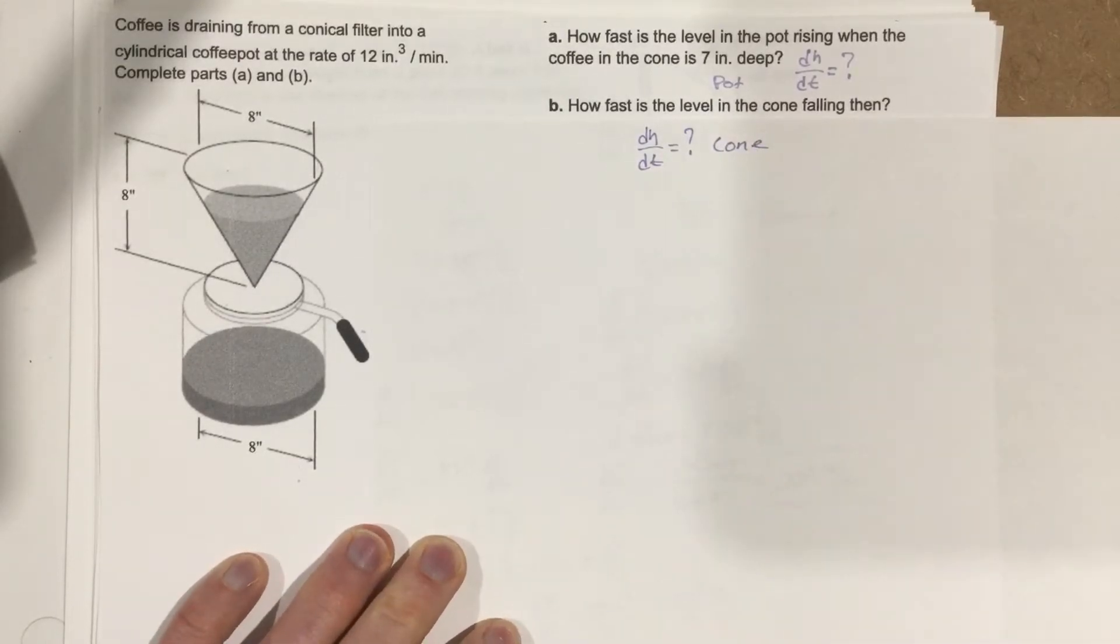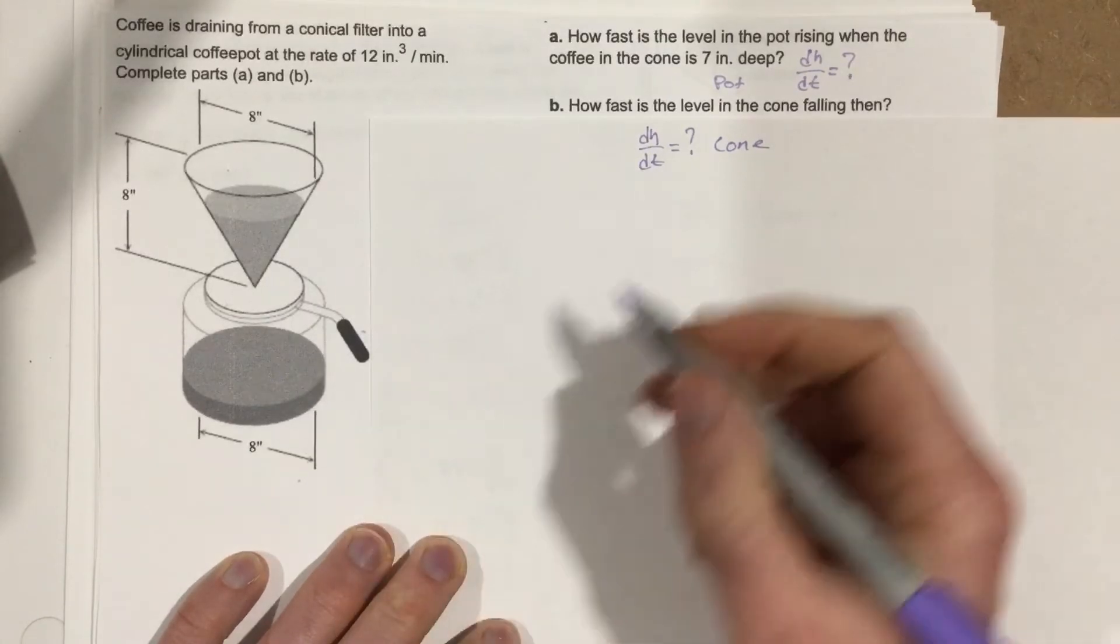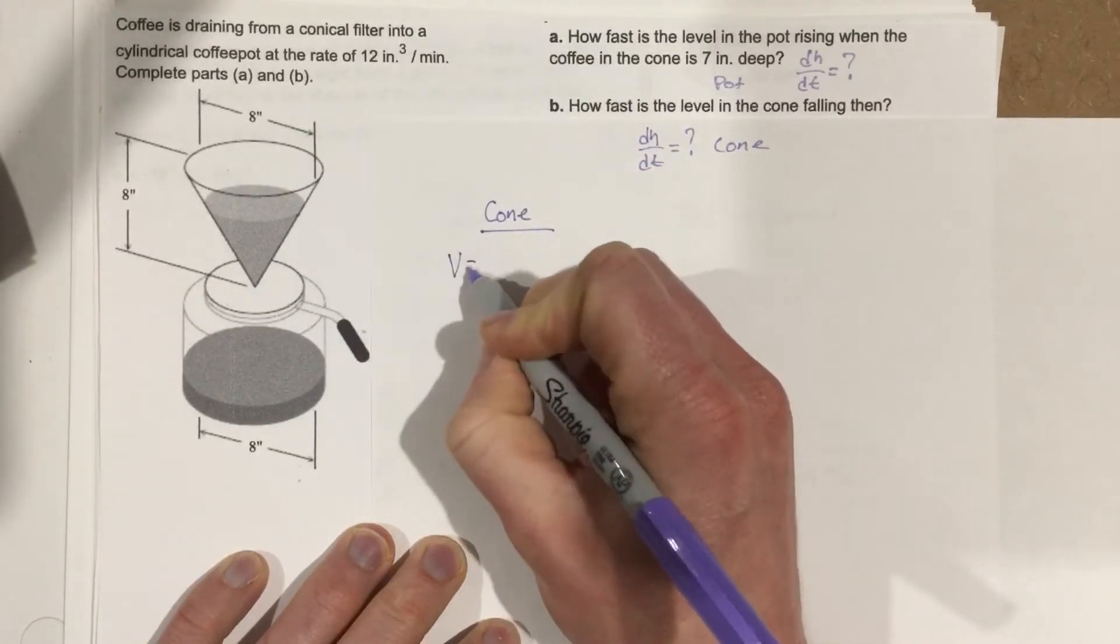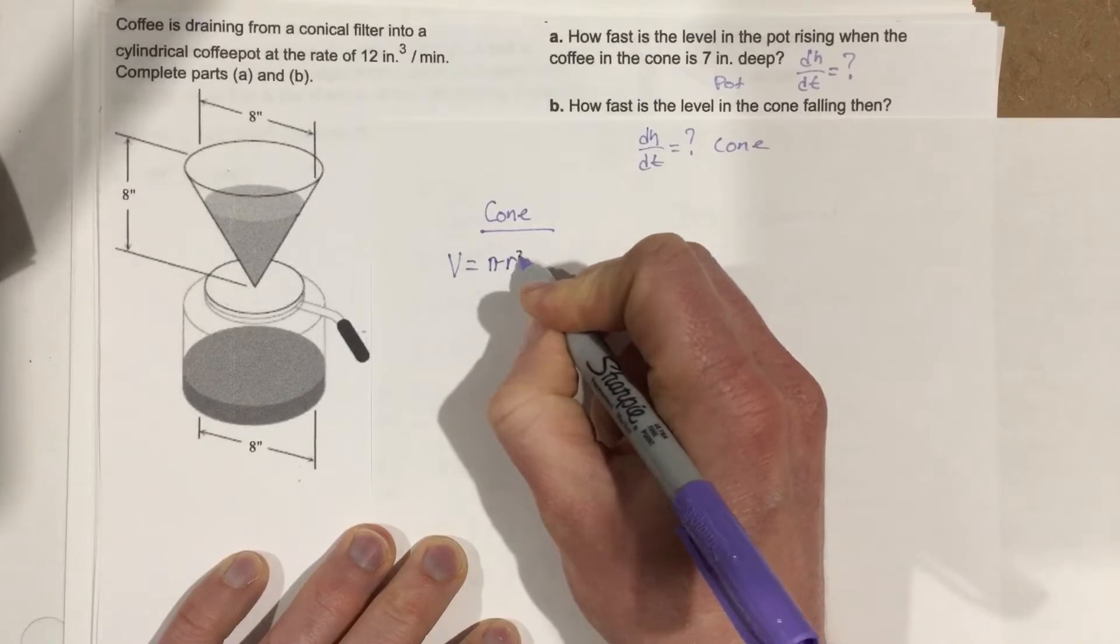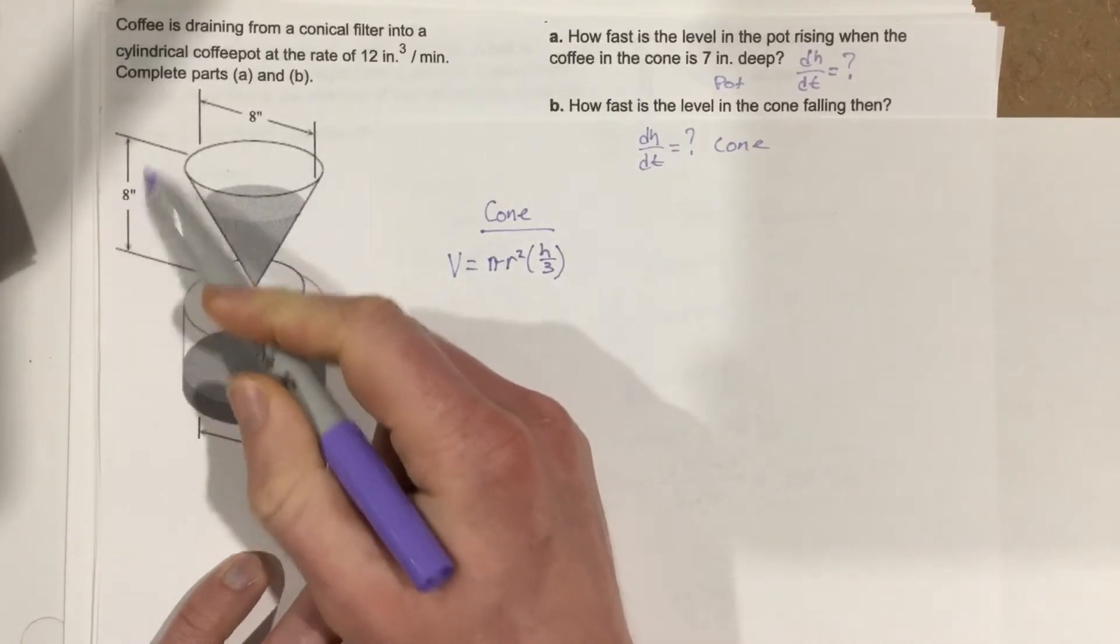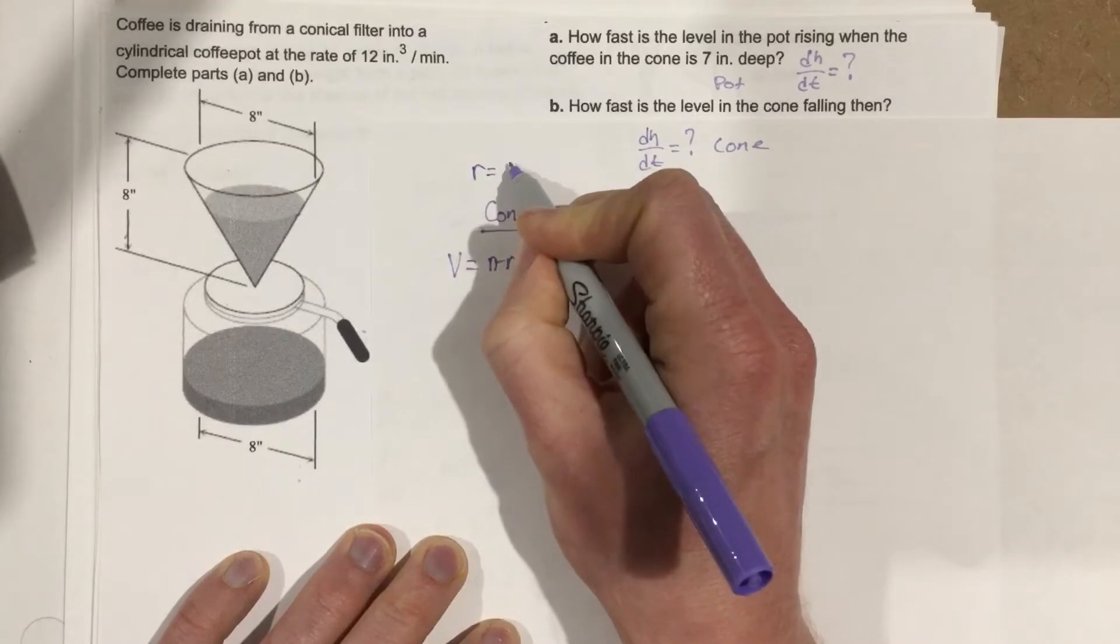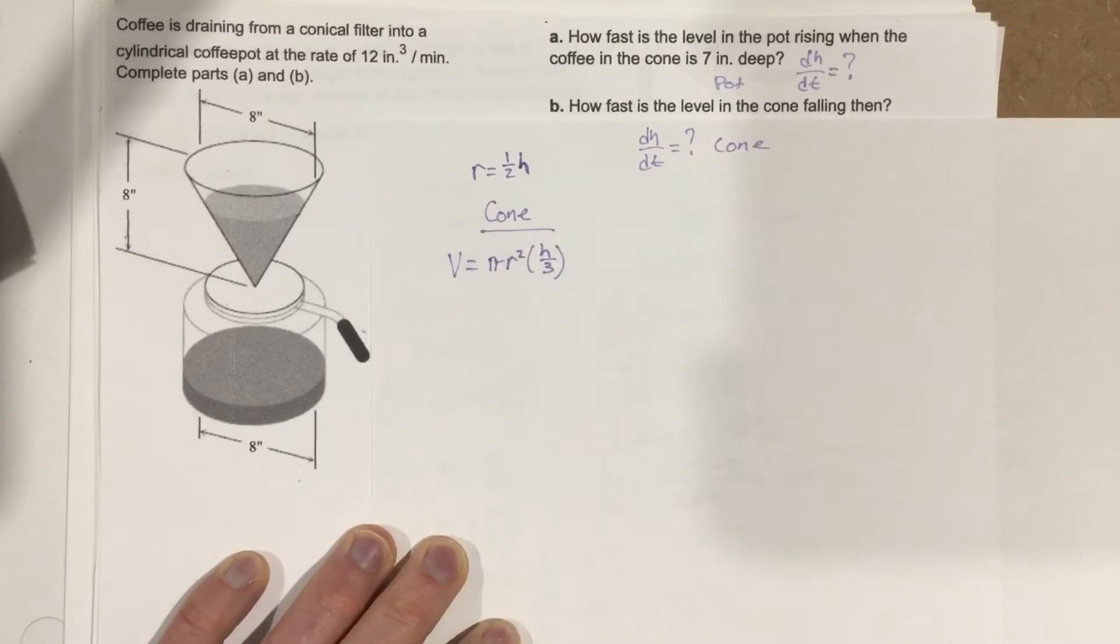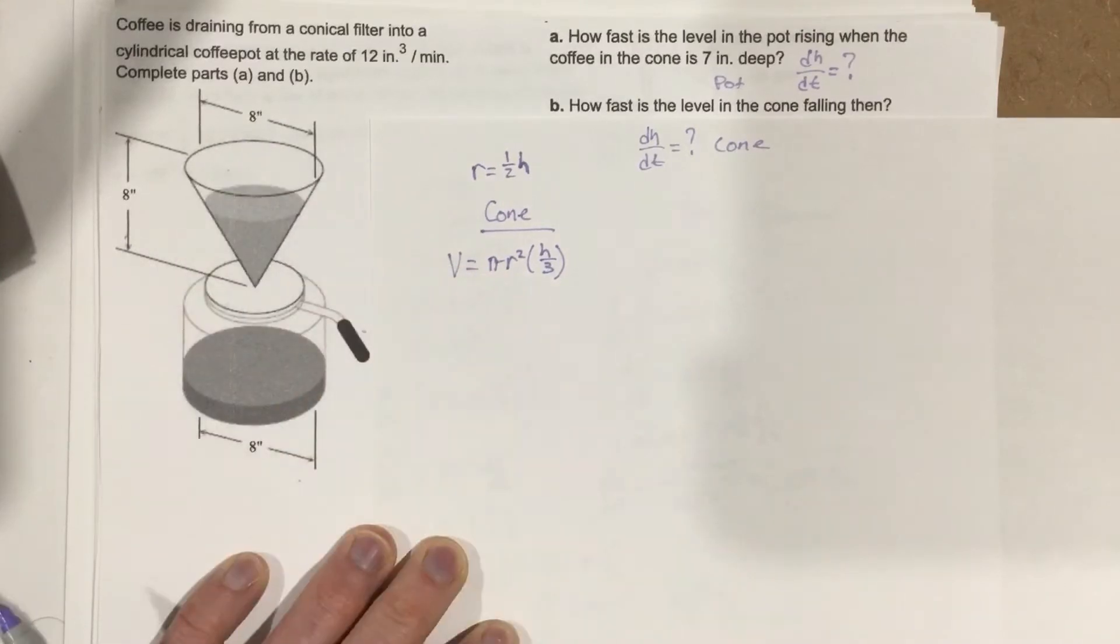Now we need to write some equations for the cone and for the coffee pot. The volume equation for the cone is V = πr²h/3. One thing to notice about the cone is that the height and the diameter are the same, so the radius is actually one half the height, r = h/2. That's a nice piece of information since we have 8 for both the height and the diameter.